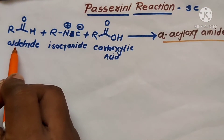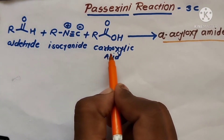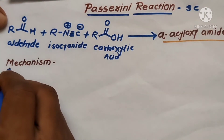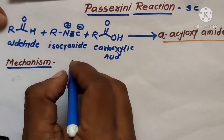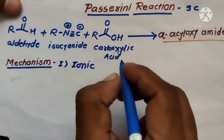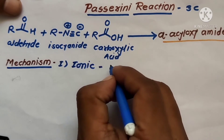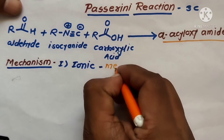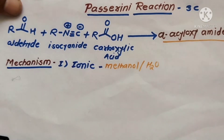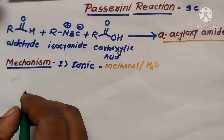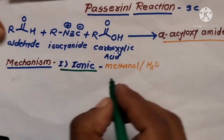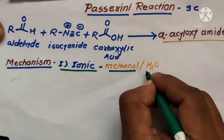In this three-component reaction, aldehyde, isocyanide, and carboxylic acid react with each other to form alpha-acyloxy amide compounds. The mechanism of this reaction can proceed via two different pathways. The first is the ionic mechanism, which uses a polar solvent such as methanol or water in the reaction vessel to form the final product.